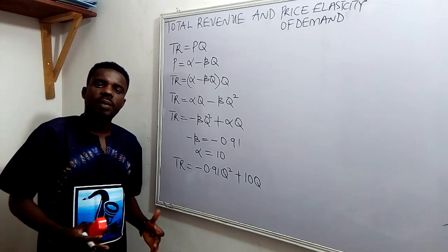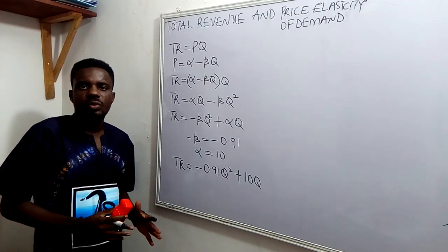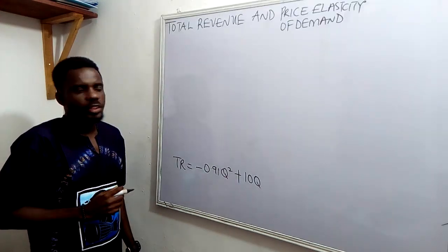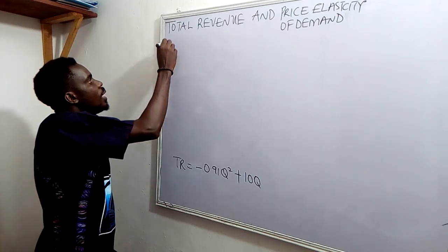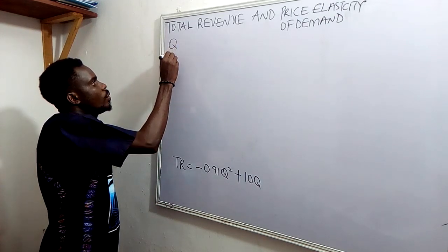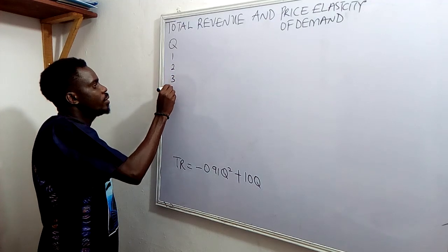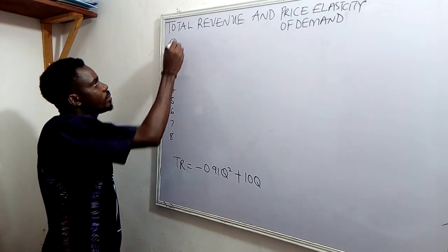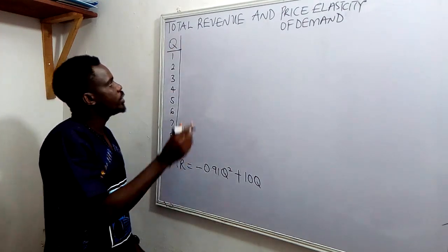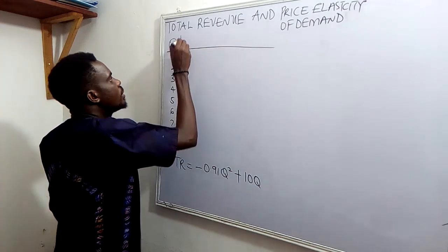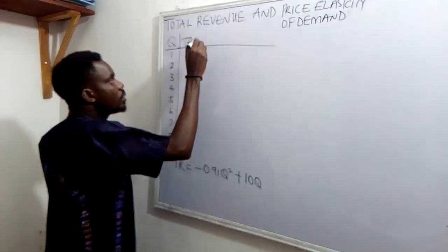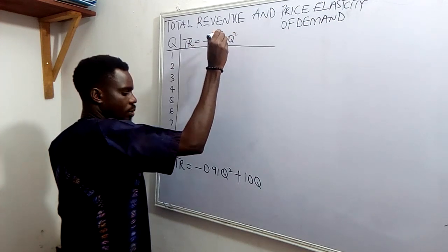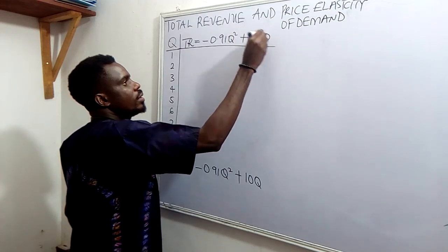We can make use of the hypothetical figures from our last video to obtain the shape of the total revenue curve. The hypothetical figures are given as Q = 1, 2, 3, 4, 5, 6, 7, and 8. The total revenue function is TR equals minus 0.91 Q squared plus 10 Q.